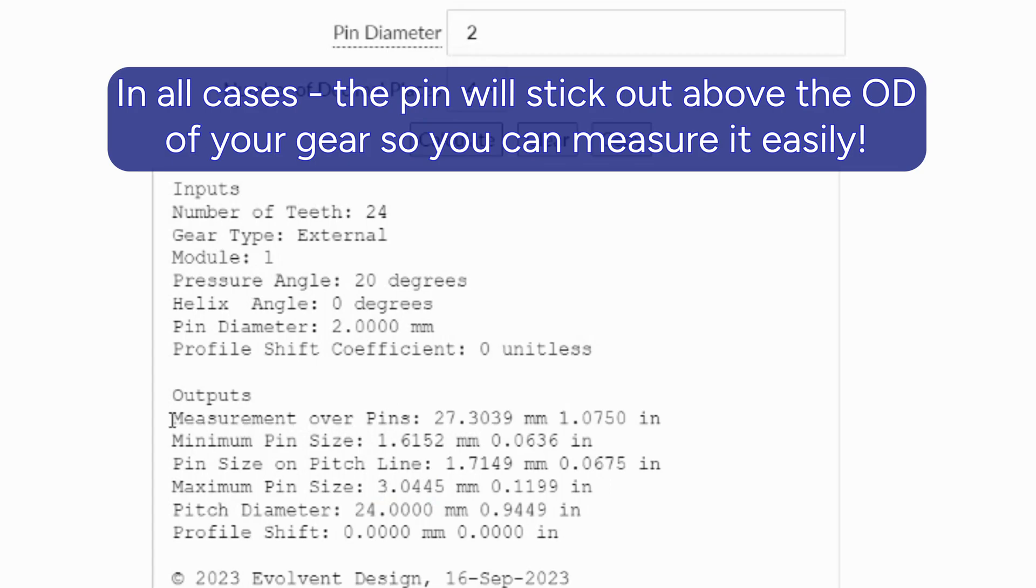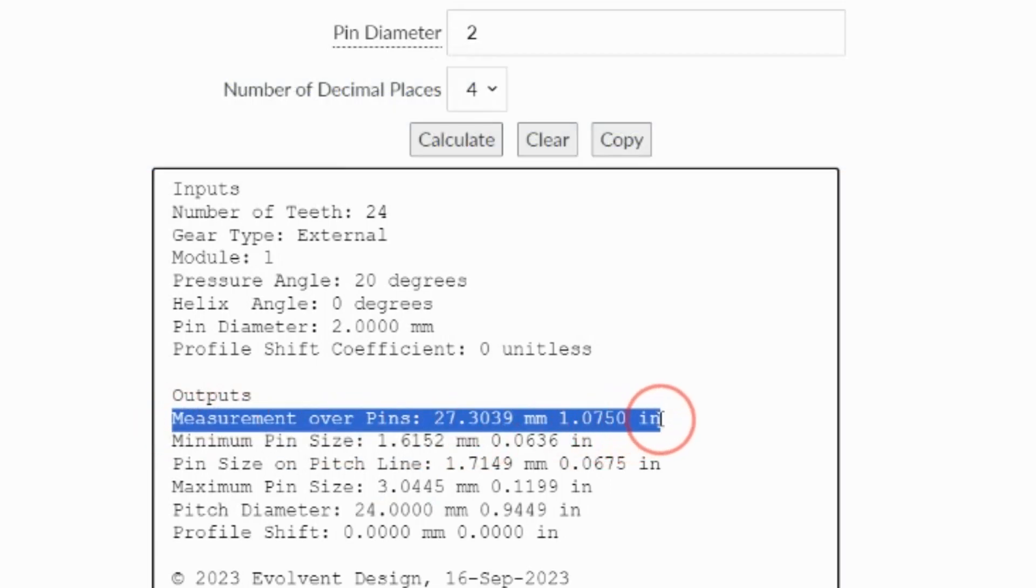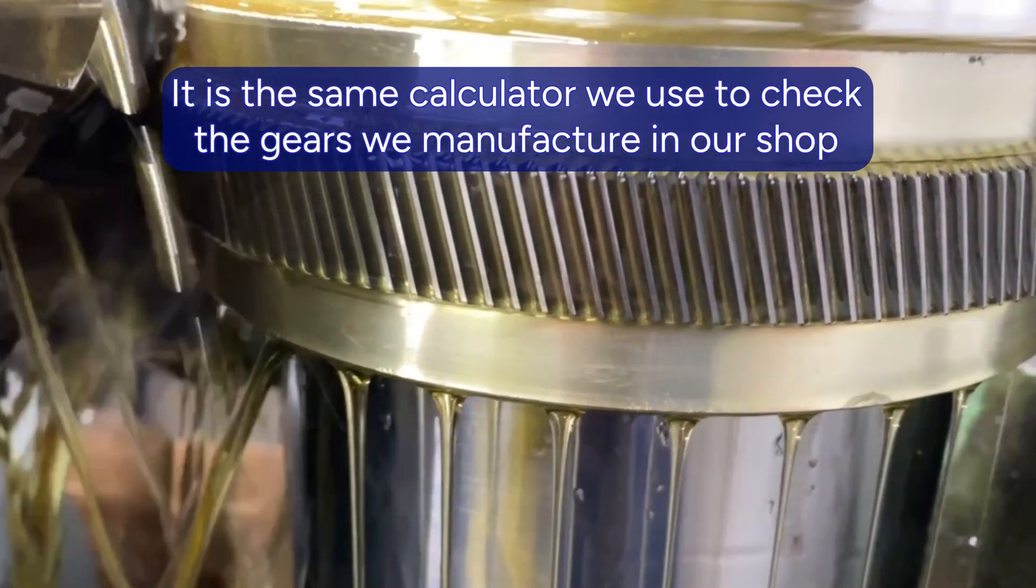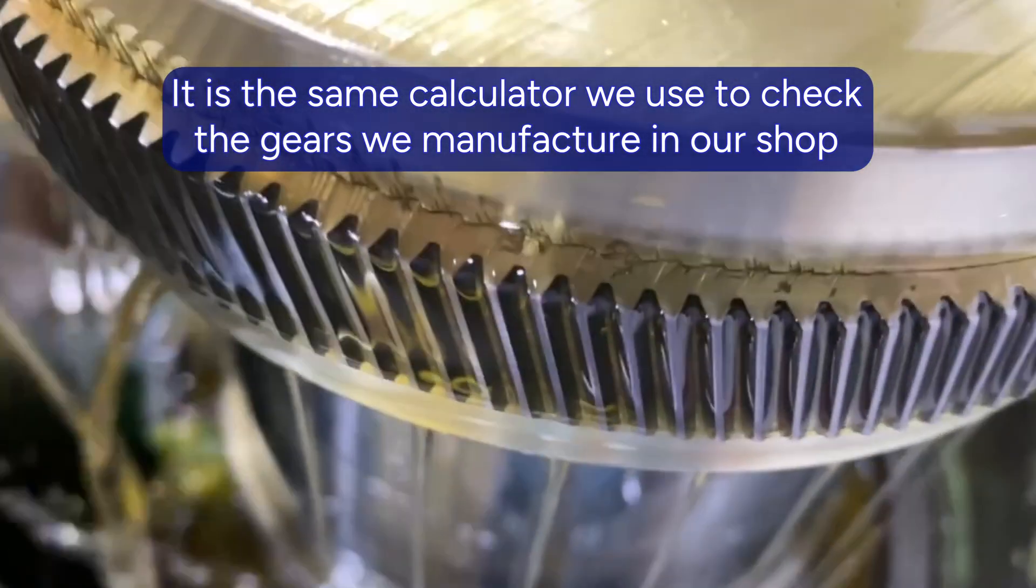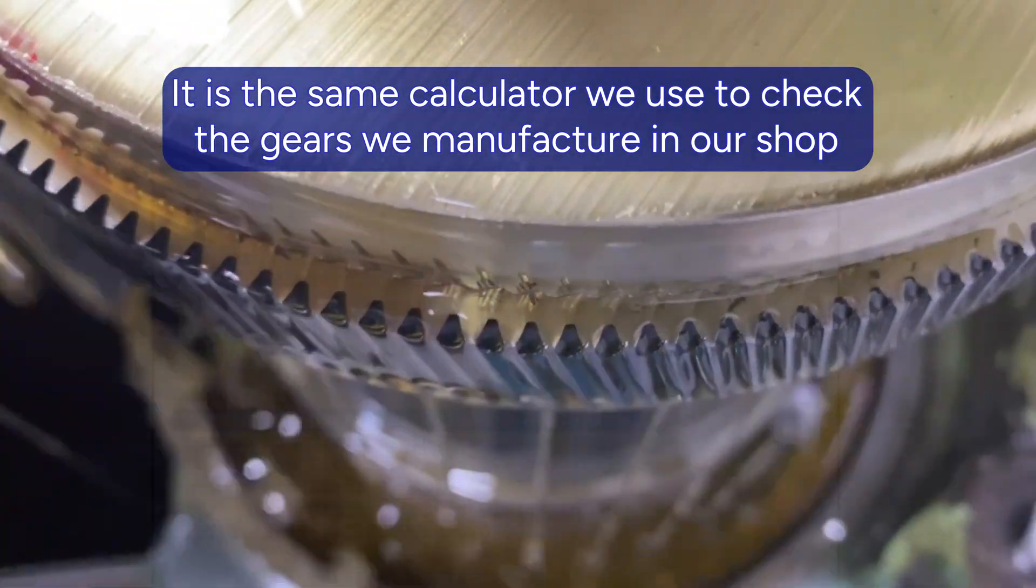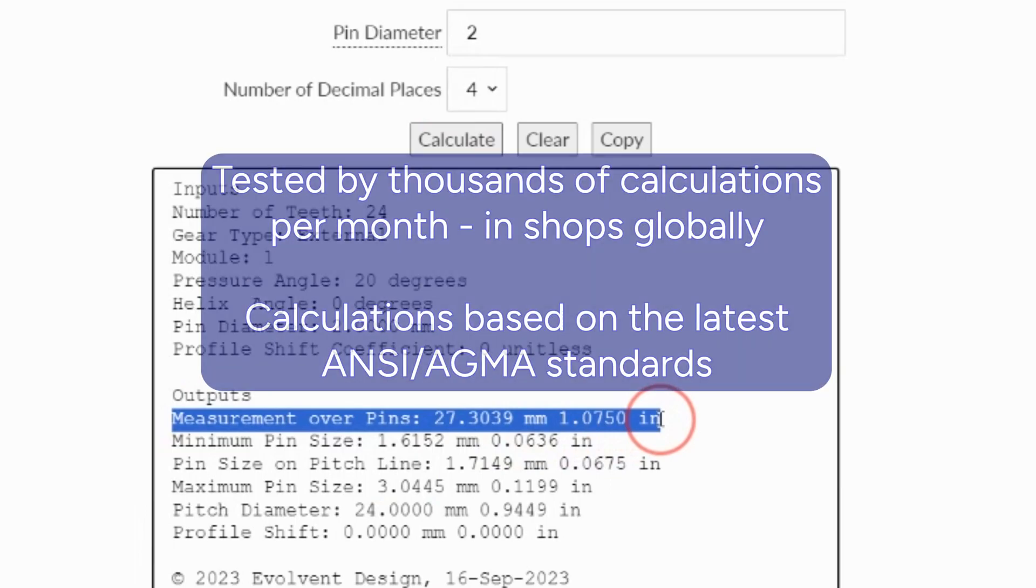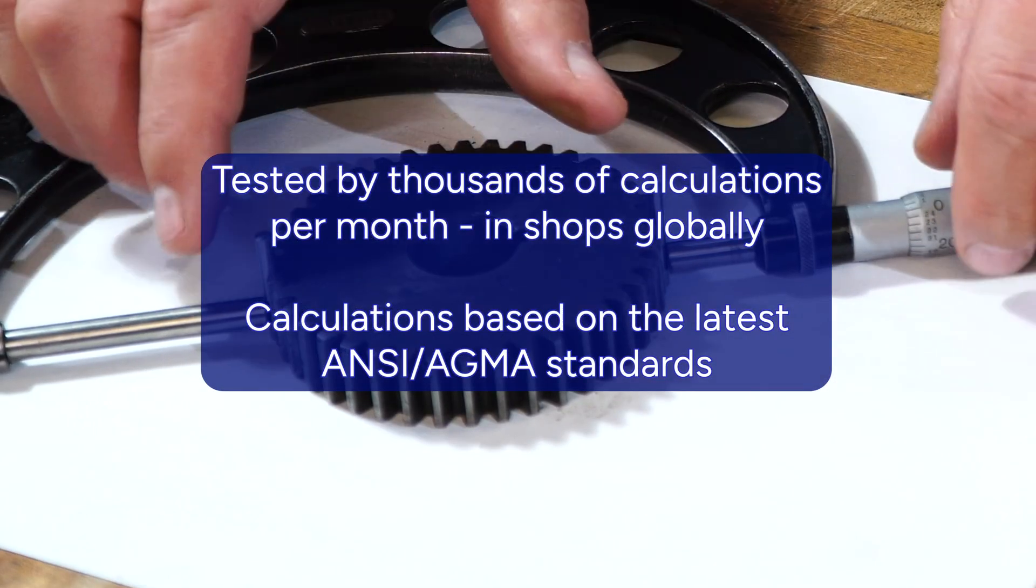Come back in. Put it in. Enter it. And there's your answer. There's your measurement over pins. That's what it's supposed to be. If it's not that number, then you know you either have more backlash or not enough backlash, or it's the wrong gear and the size is wrong.